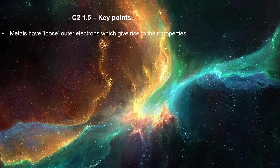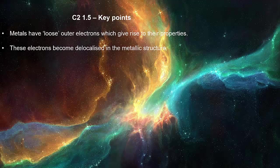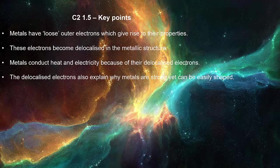Metals have loose outer electrons which give rise to their properties. These electrons become delocalized in the metallic structure. Metals conduct heat and electricity because of their delocalized electrons. The delocalized electrons also explain why metals are strong yet can be easily shaped.